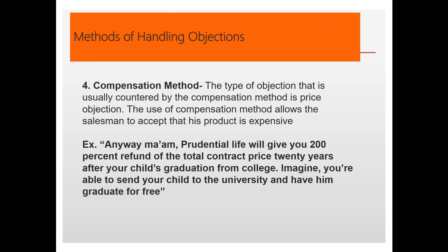The Compensation method is usually used by people in the insurance business. When clients think a product is very expensive, you counter with all the compensations the client would receive in the future. For example: 'Anyway, ma'am, Prudential Life will give you a 200% refund of the total contract price 20 years after your child's graduation from college — meaning you're able to send your child to university for free.'